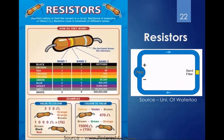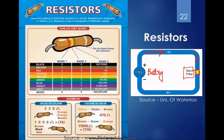A resistor restricts or resists the flow of current. A simple analogy: imagine a pump — like a battery — pumping water. The water flows through a sand filter. Depending on how fine the filter is, water resistance varies. A very fine filter with tiny holes gives high resistance; a coarser filter with larger holes gives low resistance, allowing more water to flow. This sand filter acts like a resistor.